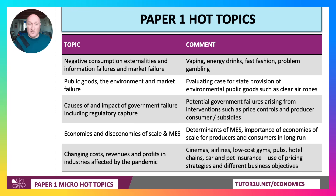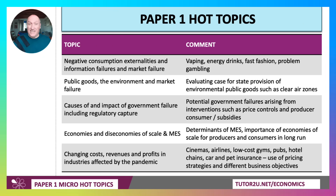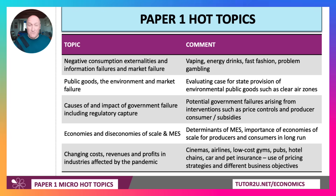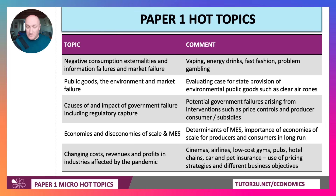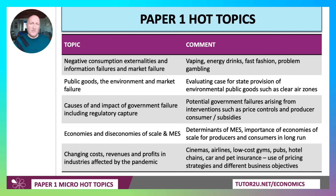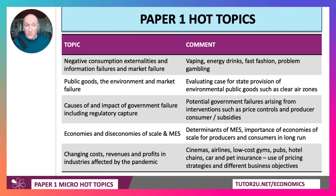Vaping, of course, is a product with mixed externalities, both positive and negative. The growth of the energy drinks market and the question of whether the government should regulate or intervene in that sector. Fast fashion — super important — the growth of low cost, low price fashion, and in particular the many externalities, both of production and consumption, that it generates. And things like problem gambling. So loads of very topical consumption market failure issues that could well feature on Paper 1.